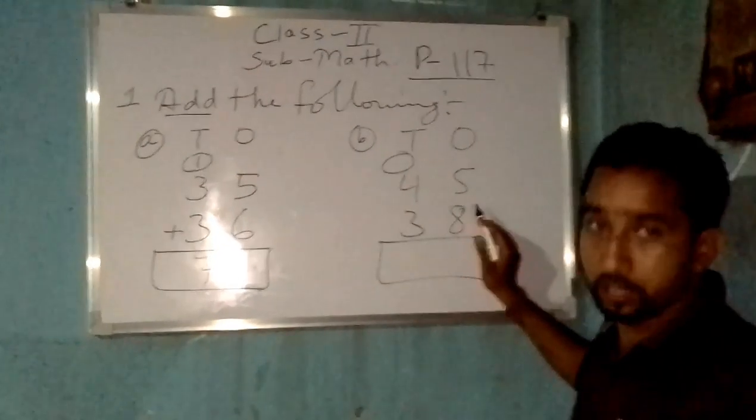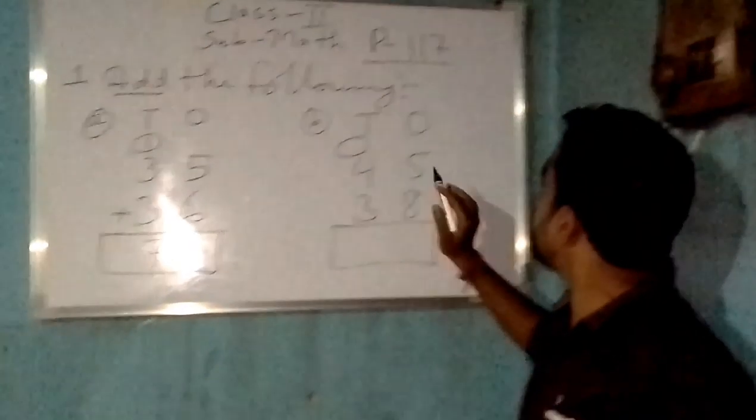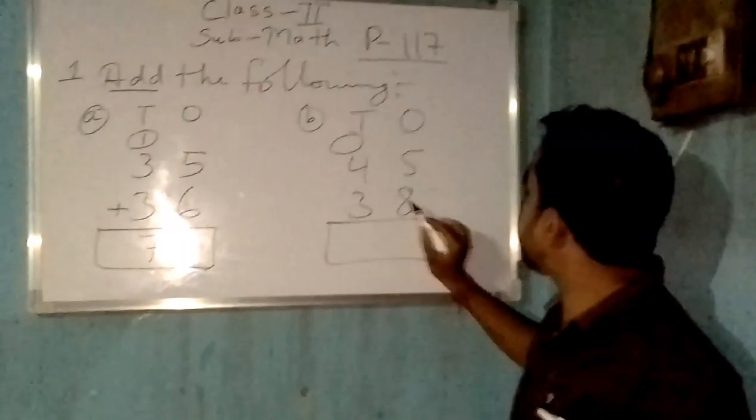Let me show an example of this one also. Understood all of you? So here 5 plus 8 is equal to 13.